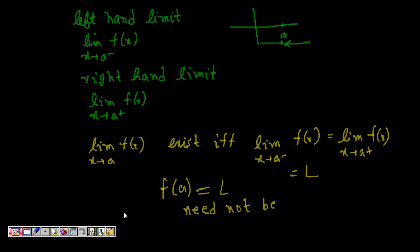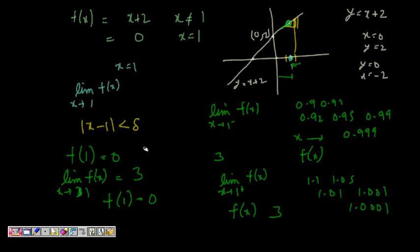In our previous example, even if f(x) was equal to 3 at that point, the limit would still be 3. But if it is 0, minus 1, or whatever else, the limit will still be 3, because that is what f(x) is tending to.